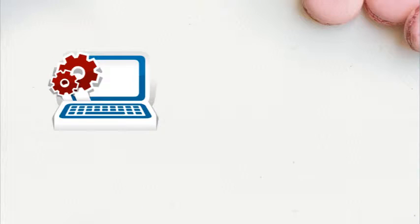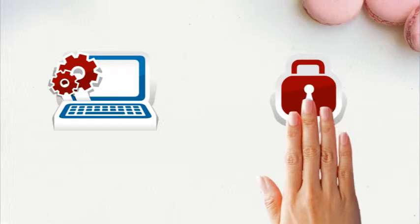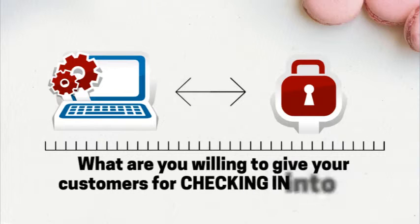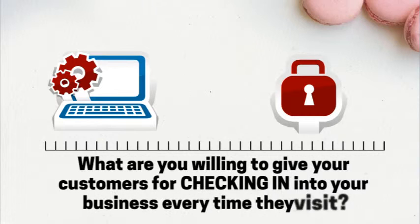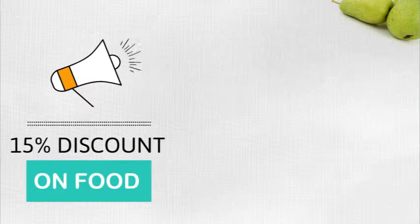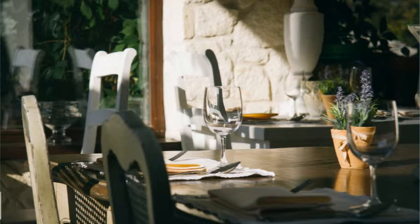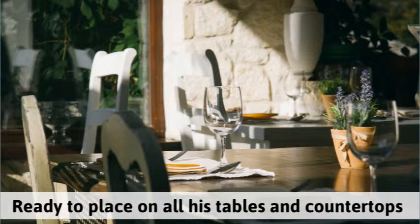Sarah asks John via email what he would like to give to his current customers as an ethical bribe for checking into his business every time they visit. John agrees to a 15% discount on food. Sarah creates a simple, proven-to-convert copy-paste template and sends it to John by mail, ready for him to place on all of his tables and countertops.